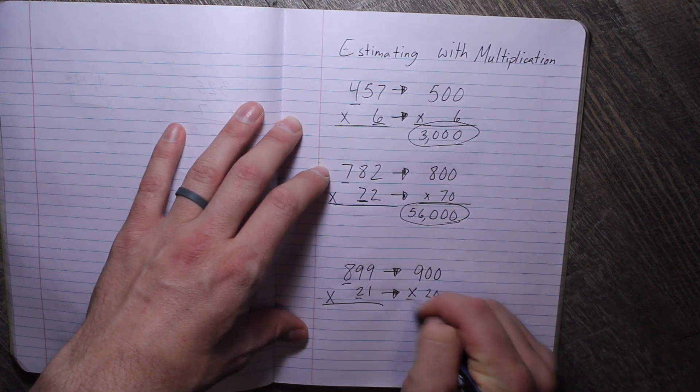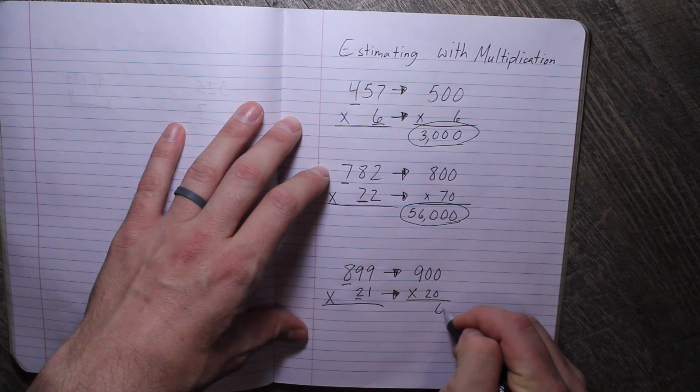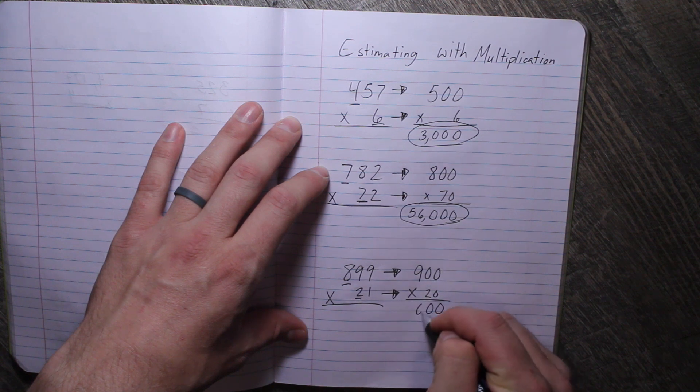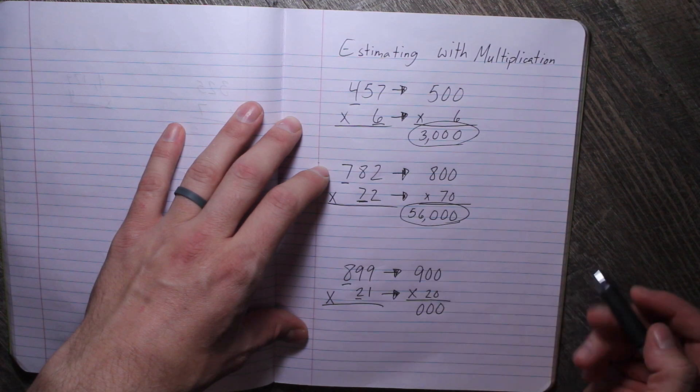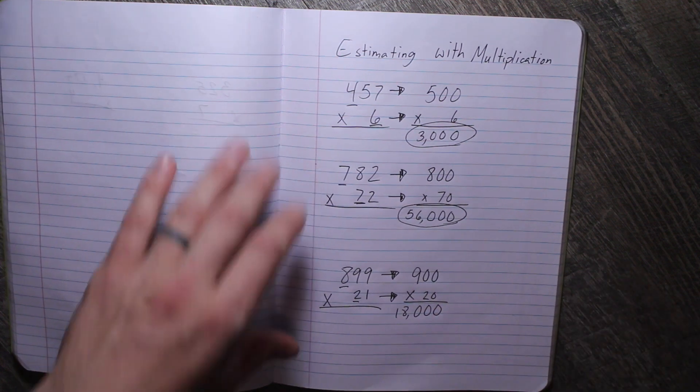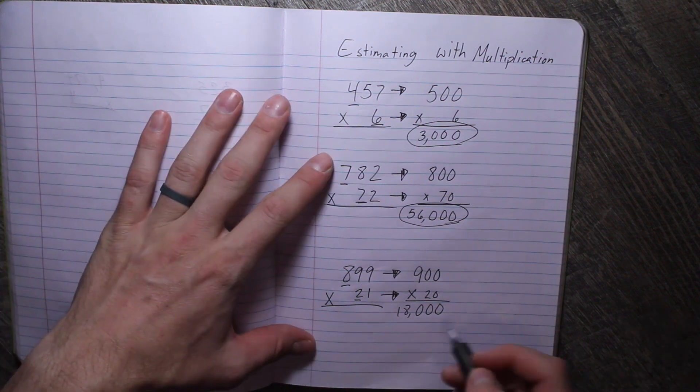All right, so now we can multiply. How many zeros do I have in my factors? Three. So I'm going to have three zeros in my product. Two times nine is 18. So 899 times 21 is about 18,000.